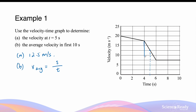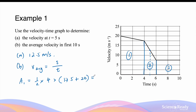We can divide the graph into three areas or three parts. The first part is a trapezium, the second part is also a trapezium, and the third part is a rectangle. So Area 1 is equal to half times by the height of the trapezium, which is 4 seconds, times by A, which is the shorter side — that looks to be 17.5 meters per second — plus the longer side B, which is 20 meters per second. This gives a displacement of 75 meters in the first 4 seconds.